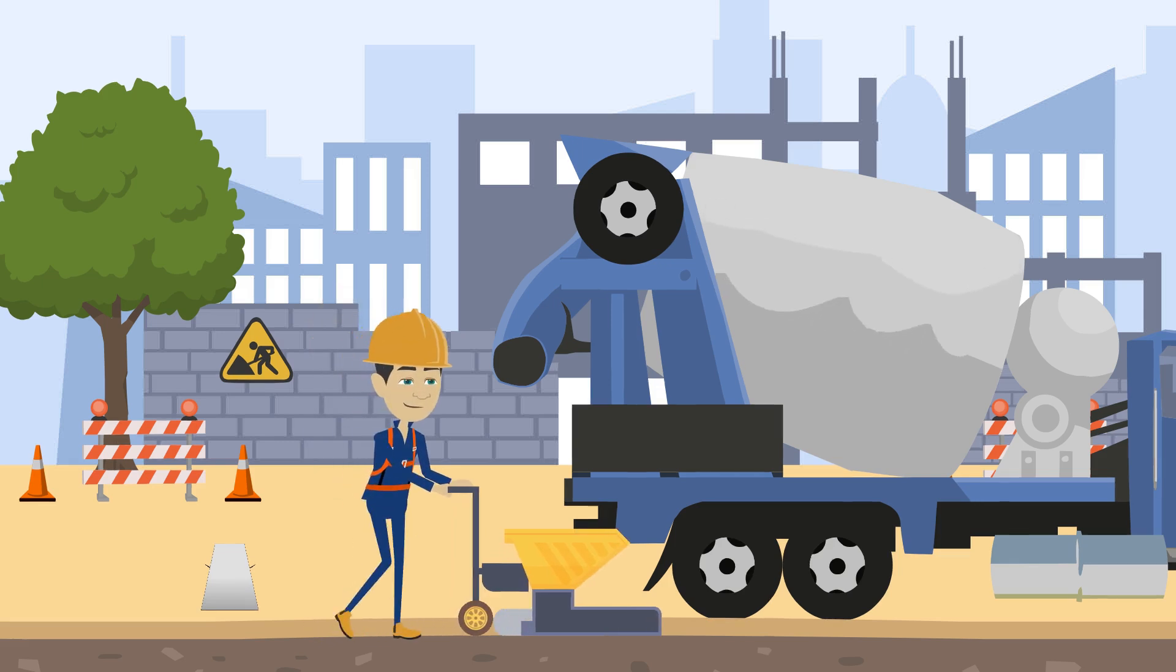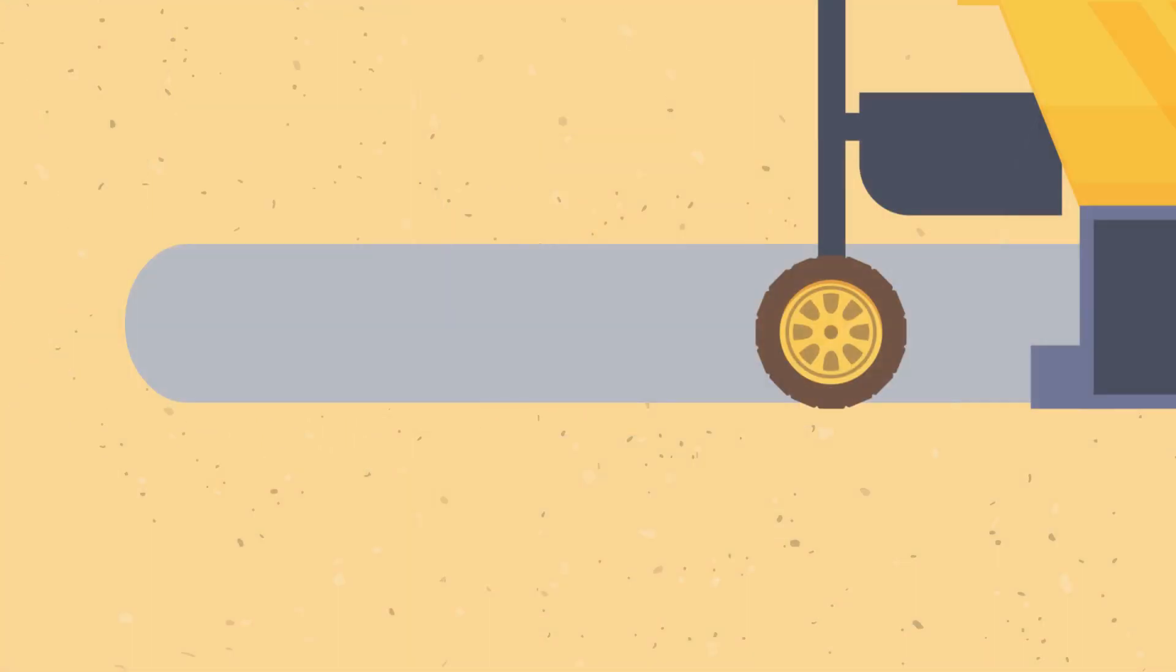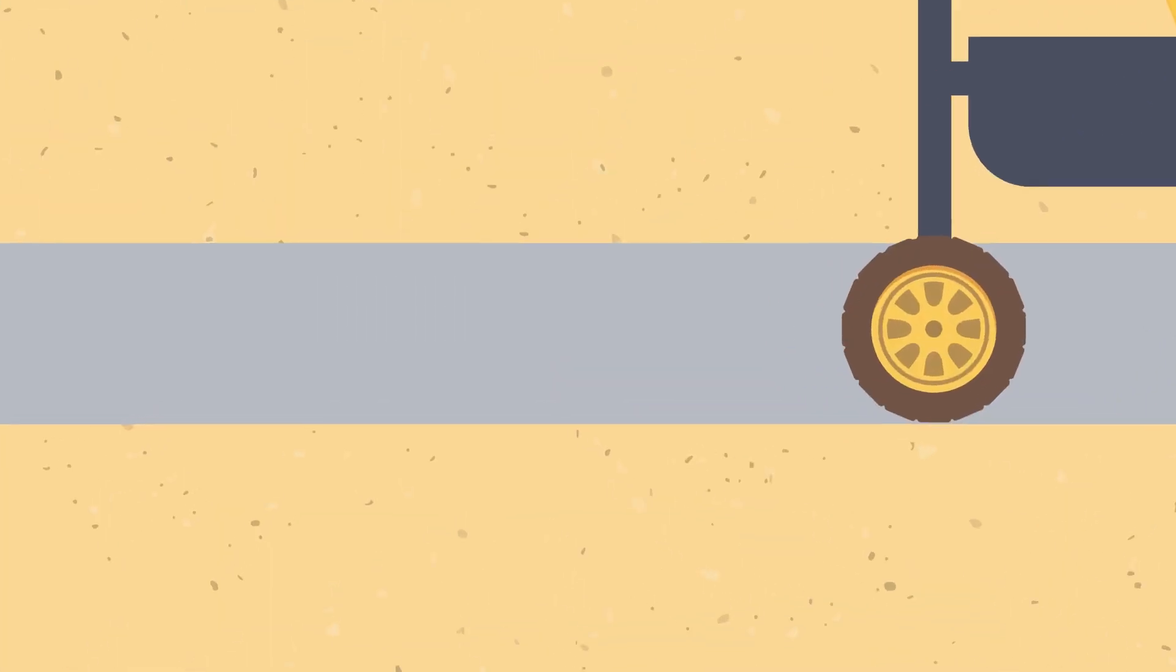If the concrete mix is too wet, it will not hold its shape as it forms through the machine. If the mix is too dry, it will tend to crumble and may even crack as it sets.